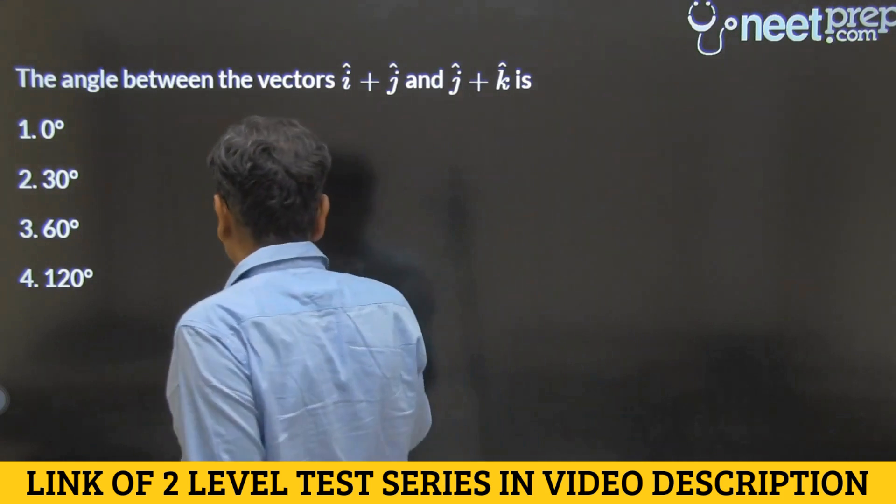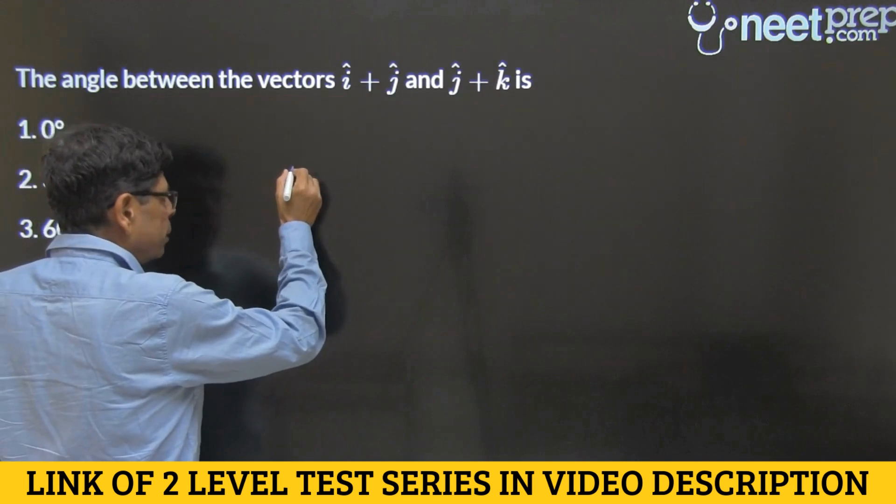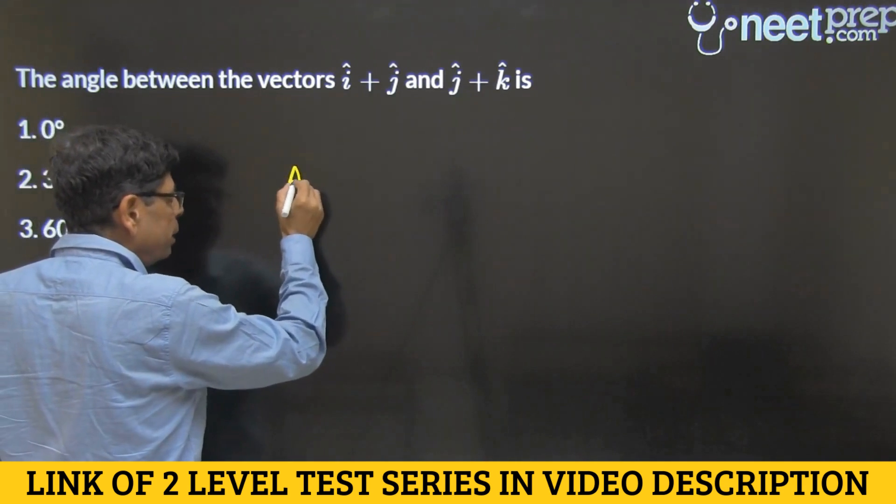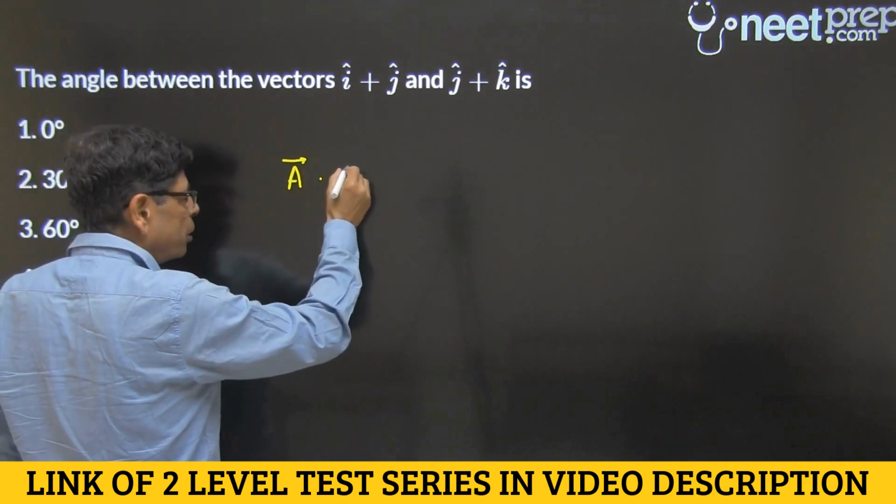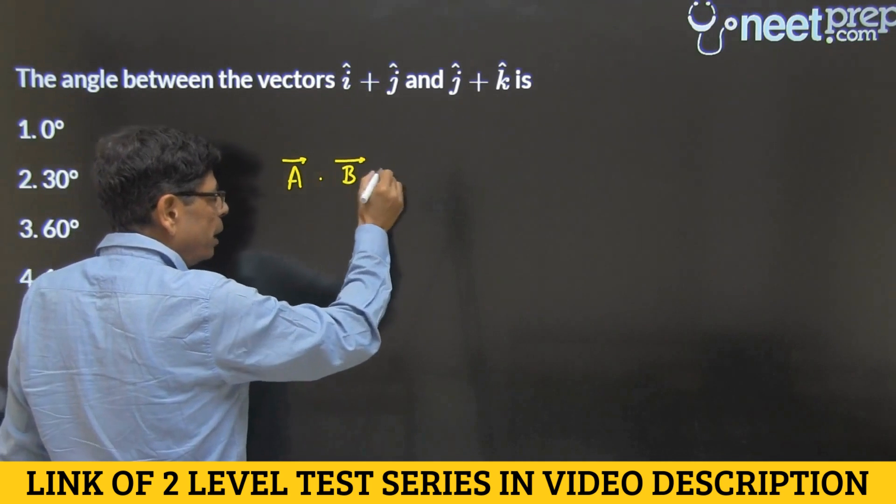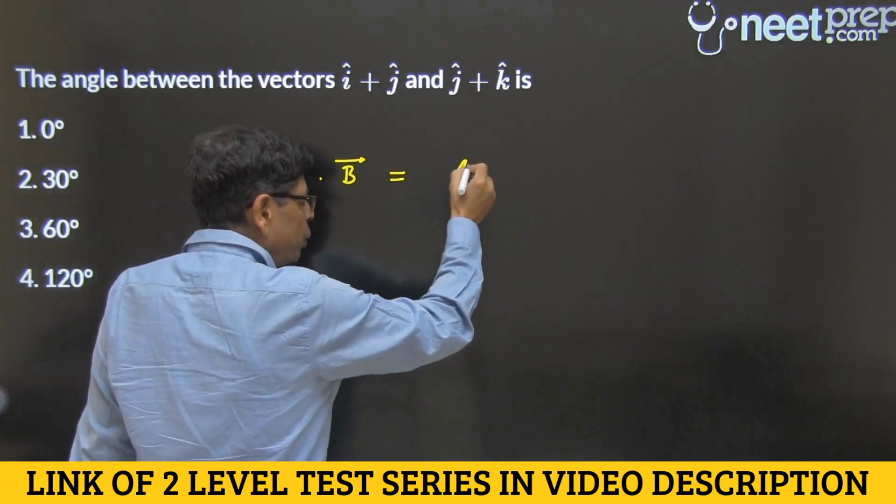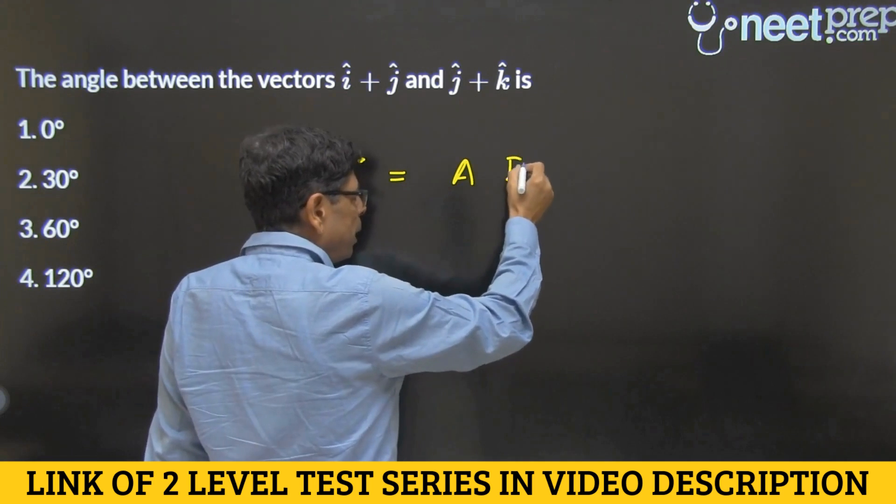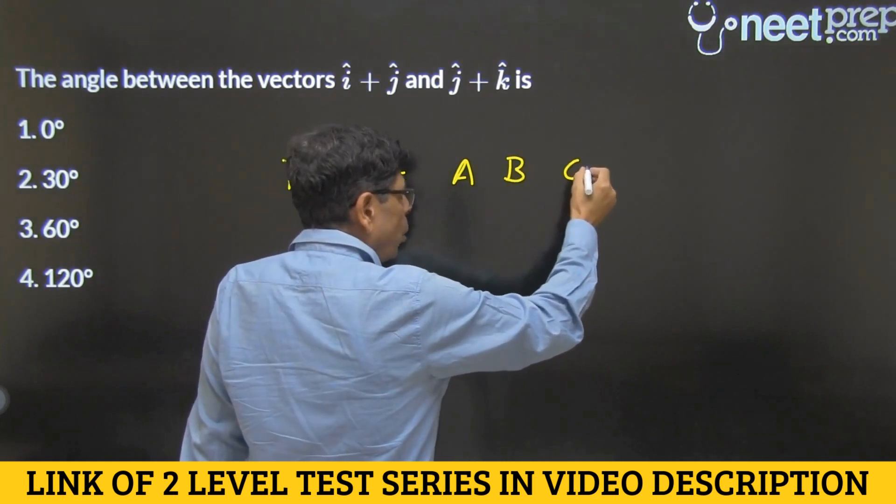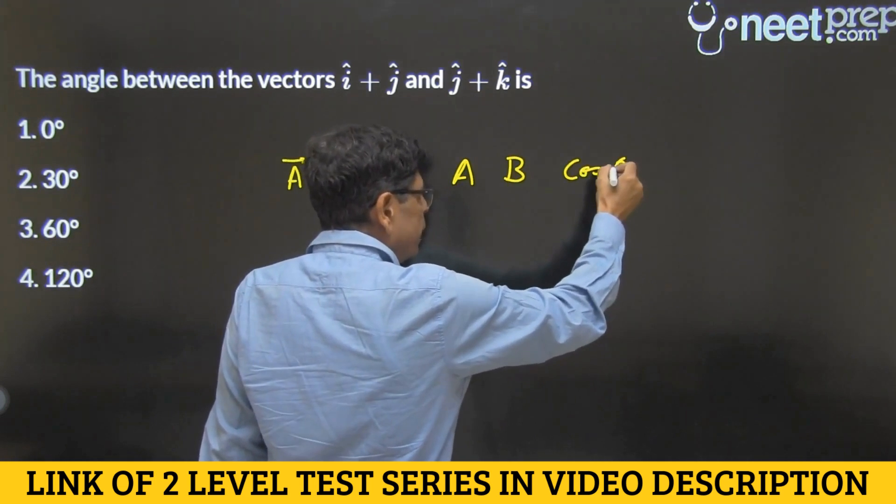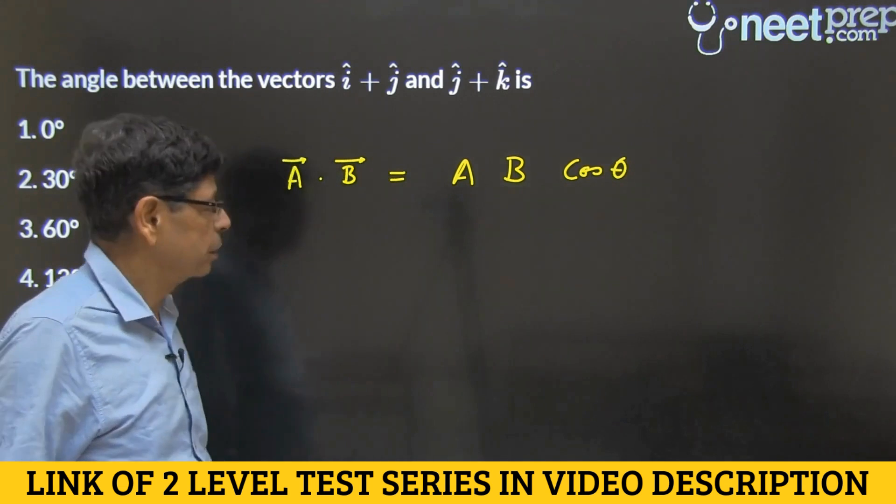Now, you should know, in general, if we have got two vectors A and B, then dot product of these two vectors A and B is defined as magnitude of vector A multiplied by magnitude of vector B, also multiplied by cos of the angle between the two vectors.